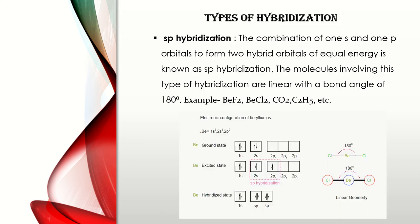Hybridization is of different types. First, SP hybridization. SP hybridization is the combination of 1S and 1P orbitals to form two hybrid orbitals of equal energy. The molecules involving this type of hybridization are linear with a bond angle of 180 degrees.